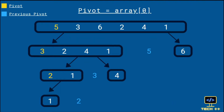We have elements 5, 3, 6, 2, 4, and 1 which we need to sort using the Quicksort algorithm. First we need to determine the pivot, and here we are taking the first element of the array as a pivot. We have marked the pivot elements in yellow and previous pivot elements in blue. Initially, the pivot here is 5. Now we compare all the elements with our pivot and partition the array. We put all elements that are less than the pivot in the first partition and the rest in the second partition.